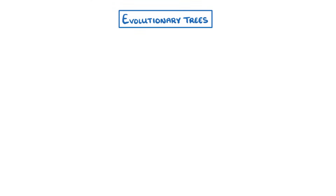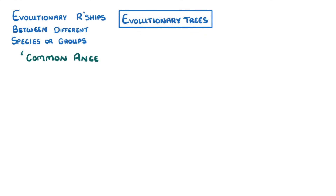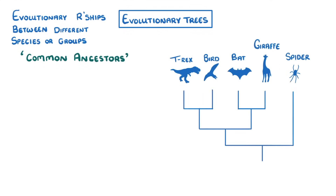The last thing we need to look at are evolutionary trees. These show us the evolutionary relationships between different species or groups by linking common ancestors. For example, we can see here that birds are more closely related to Tyrannosaurus rexes than they are to bats, because T-rexes and birds share a more recent common ancestor. And we can also see that bats and birds are more closely related to each other than either are to spiders, because their common ancestor with spiders is all the way back here, which means it's further back in the past.